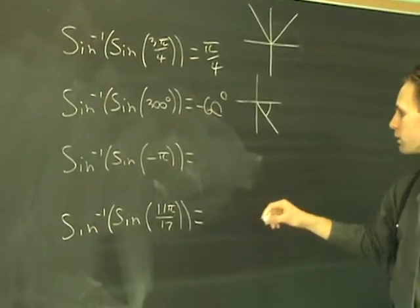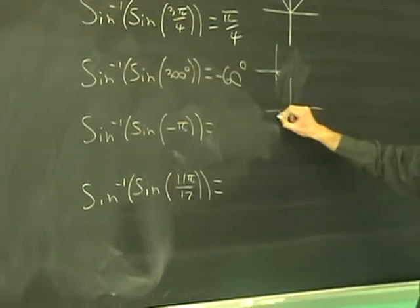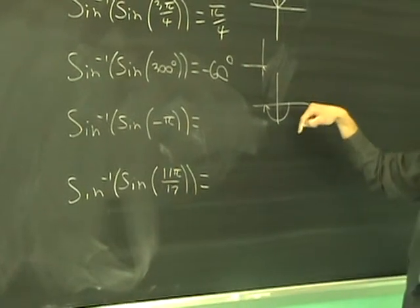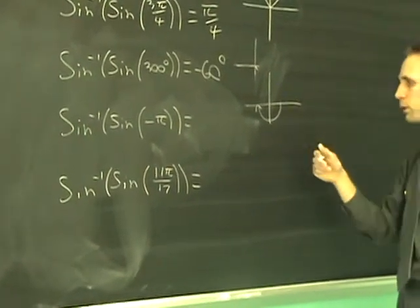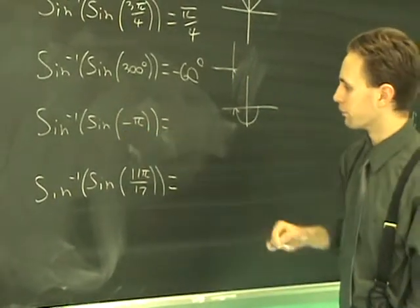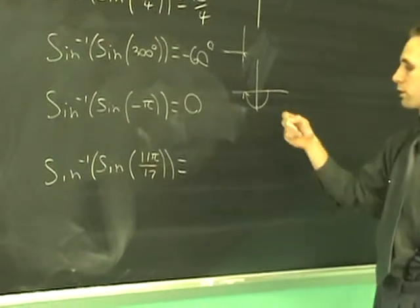Sine of minus pi is a similar sort of a thing. That would be this angle here. Again, it's going to return what angle inside between minus pi over 2 and pi over 2 has the same sine as the minus pi, and that's going to be zero, because both sines are zero.